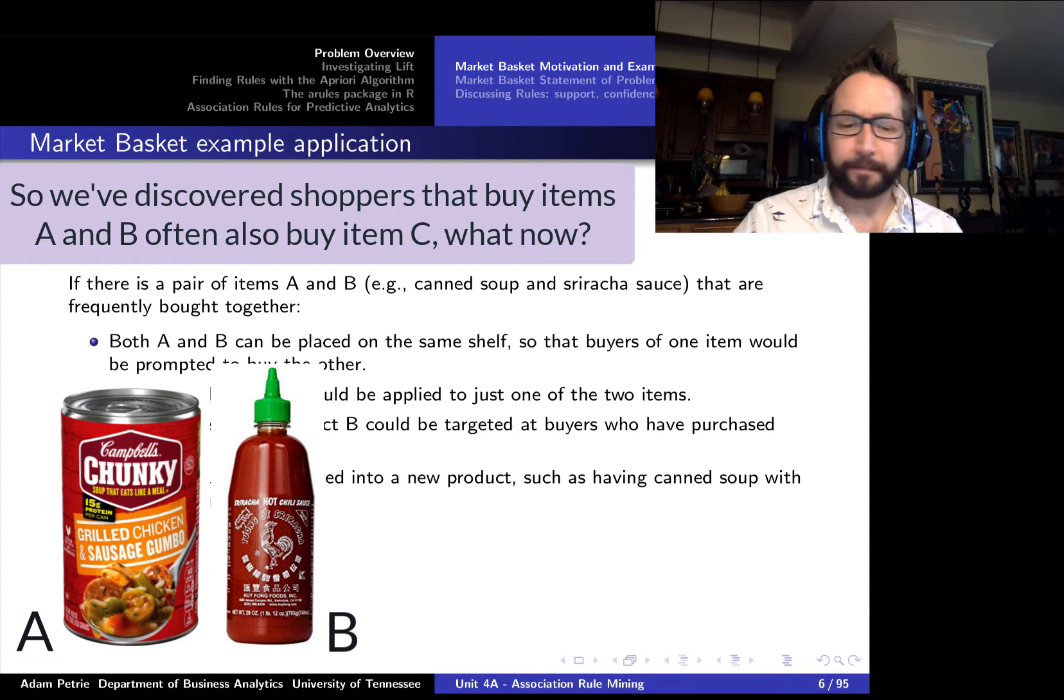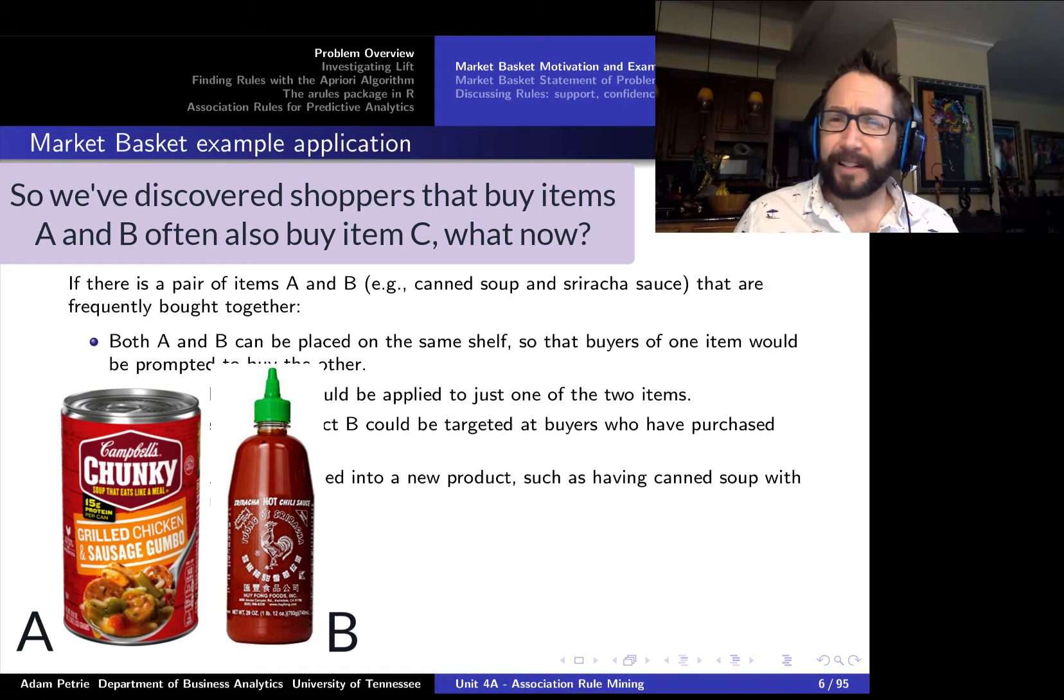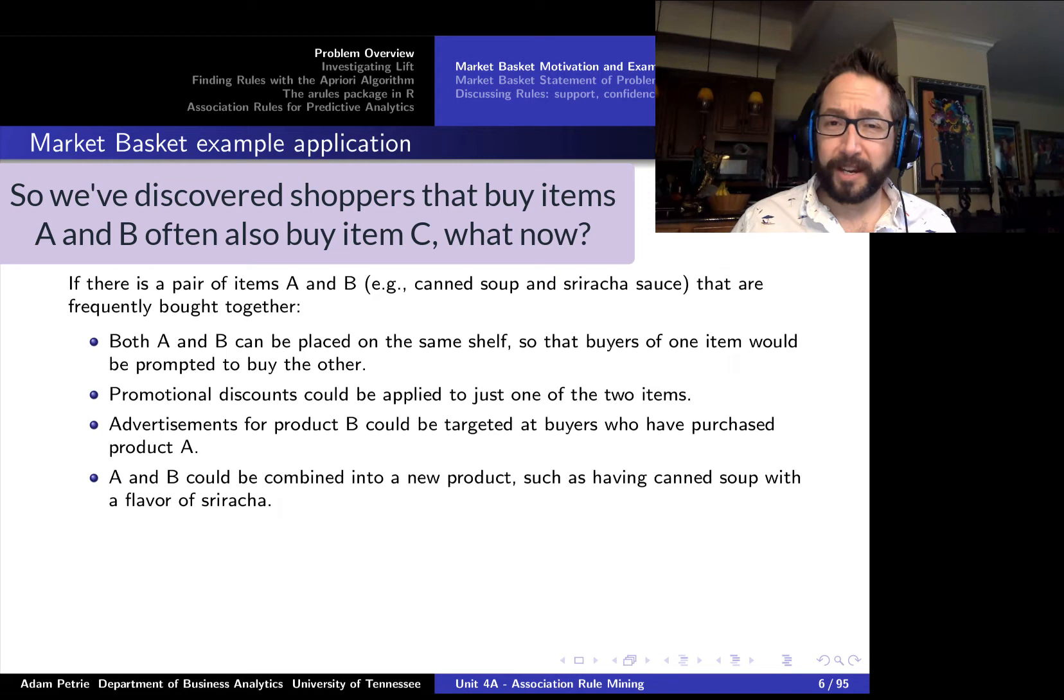And there are a few other applications as well. So if we happen to know that items A and B are commonly purchased together, we can design store layouts more effectively. So I don't know about you, but oftentimes if I go to the grocery store, I have a list in my mind of what I need to pick up. And do I actually end up picking up everything on that list by the end of the shopping trip? Well, probably not. I'm going to forget an item or two. And so if we know that pairs of items tend to be purchased together, well, we can make sure that those items appear close together on the shelves. That way we don't give the shopper an opportunity to forget one of those two items. Or what we can do is actually use these market basket analysis rules to come up with new product ideas as well.